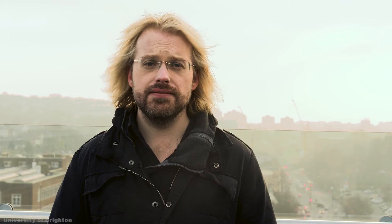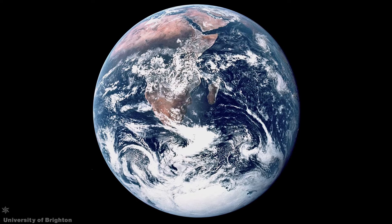Our atmosphere is a complex multi-phase system comprised of many different species of gases and particles, although it is in fact just one of five components of the overall Earth system.